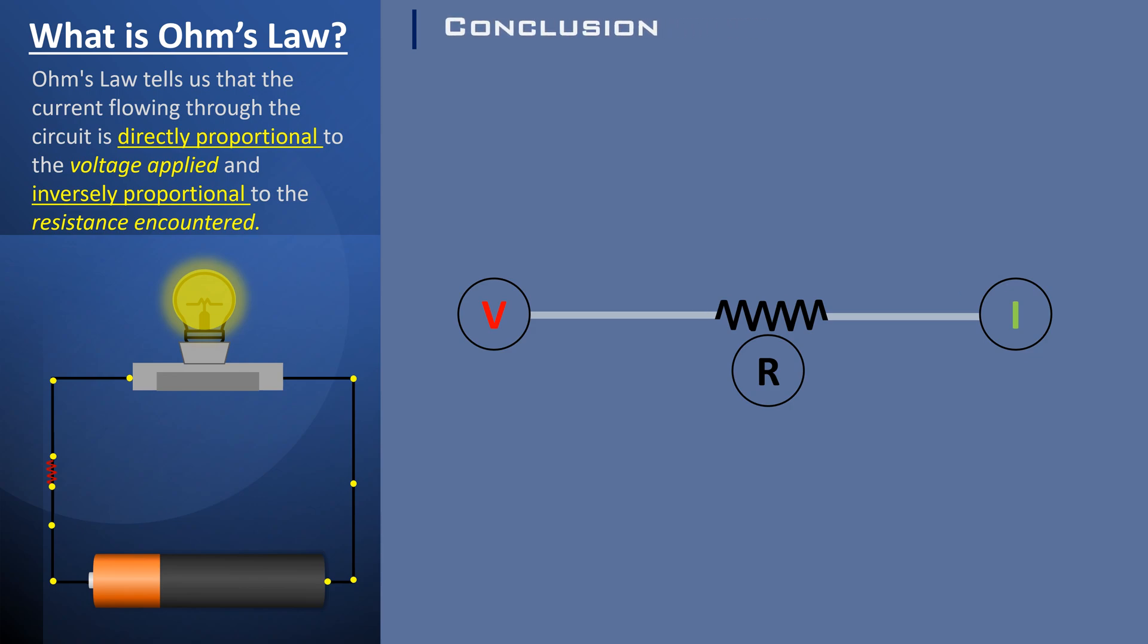this means that if you increase the voltage across a conductor, while keeping the resistance constant, the current will increase proportionally. Conversely, if you increase the resistance while maintaining the voltage constant, the current will decrease.